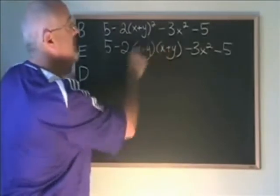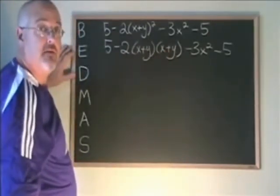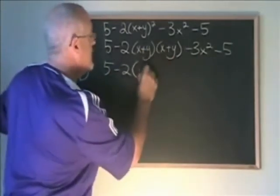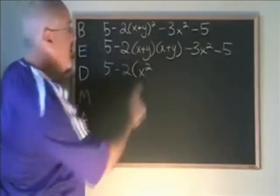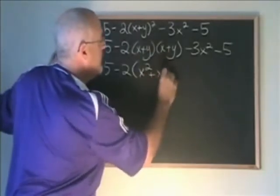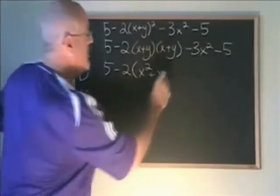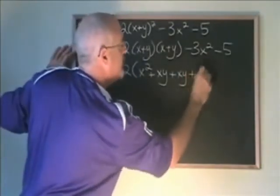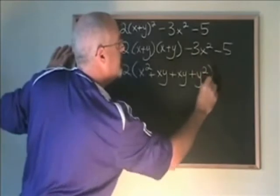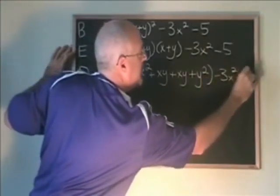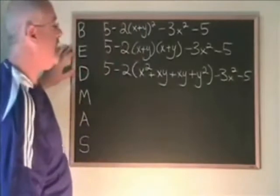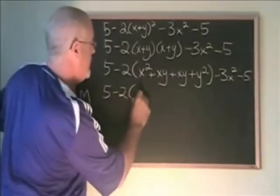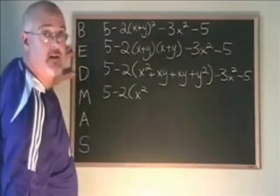x times x is x squared. x times y is xy. y times x is xy, and y times y is y squared. Now I'm going to simplify inside the bracket. xy plus xy is 2xy.